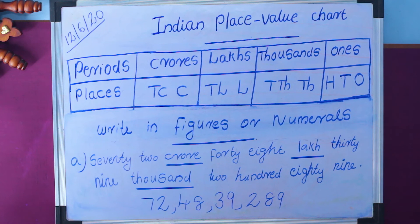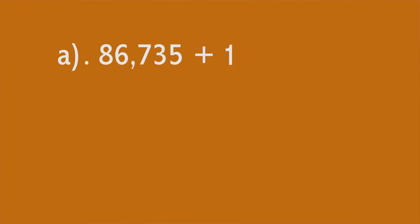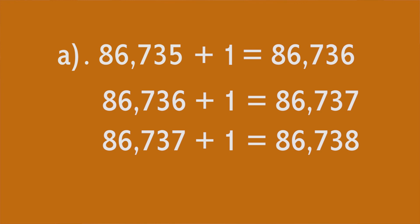All of you take page number 68 of your maths textbook, section 3: complete the following by writing the successor. The successor means adding 1. For example, the successor of 86,735 is 86,736, then 86,737, then 86,738.